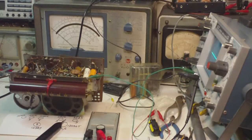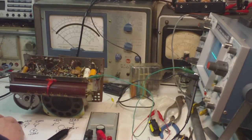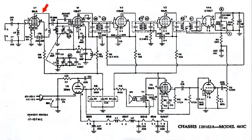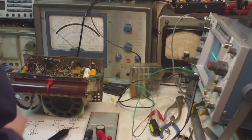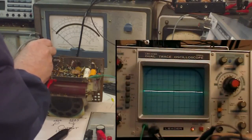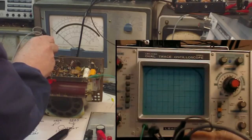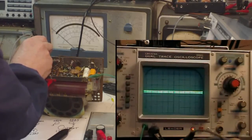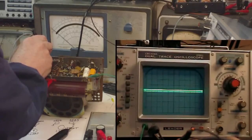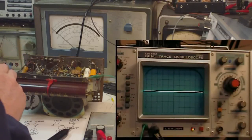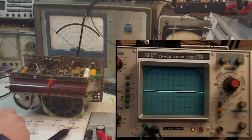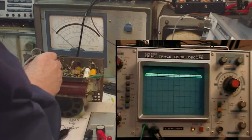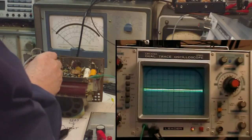I'm going to go to the 6BJ6, the first one, pin 5. You can't really see anything. That's mainly noise because the signal is so weak. I'm going to go to pin 9 of the 12BA7. Pretty much the same thing.